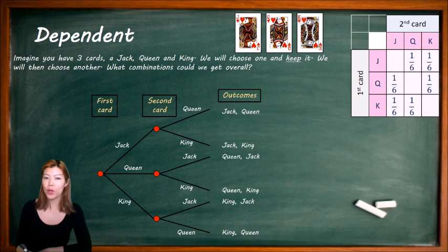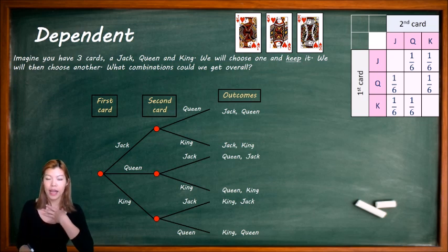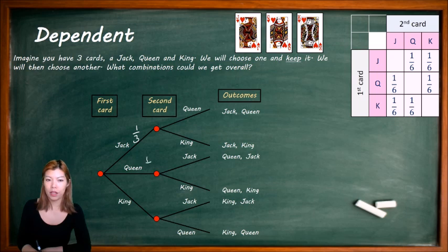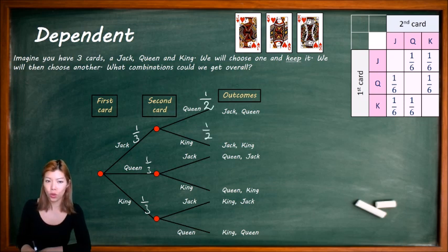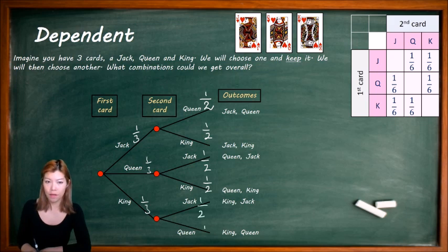Now if we don't put the card back — so we pick a card, keep it, and then pick up a second card — our probabilities change. Originally the probability of picking any of the cards was a third, but now that there's one less card, the denominator changes to 2 because we only have two cards left. So if we keep the object from the first event, in our second event the denominator decreases by 1.